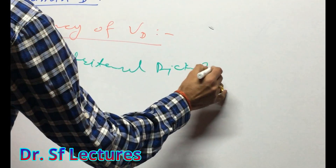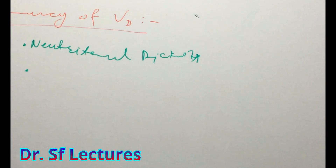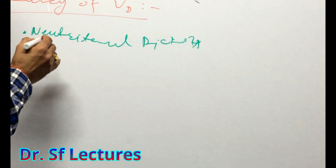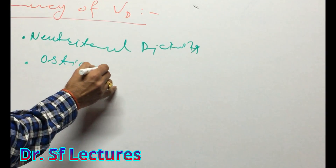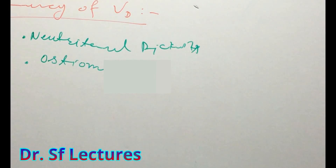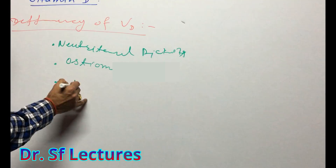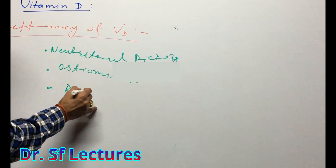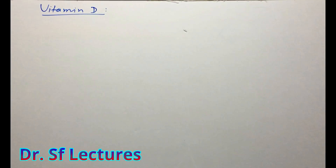There are two types of deficiencies in Vitamin D. First is nutritional rickets, and the second one is osteomalacia — not malitis, malacia. Sometimes the deficiency of Vitamin D can also cause renal rickets. So these are the deficiencies of Vitamin D.